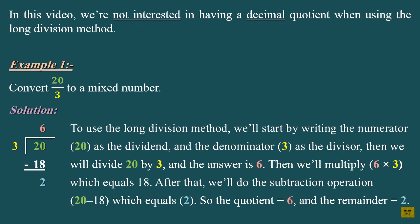And the denominator, 3, as the divisor. Then we will divide 20 by 3, and the answer is 6. Then we'll multiply 6 times 3, which equals 18.